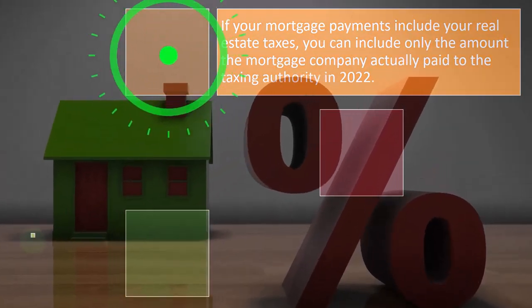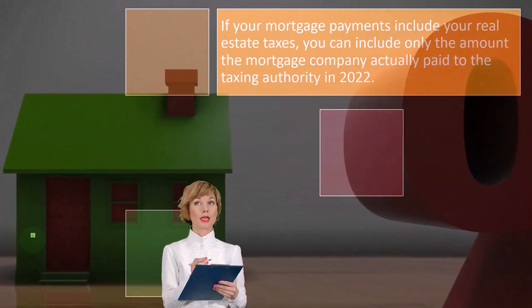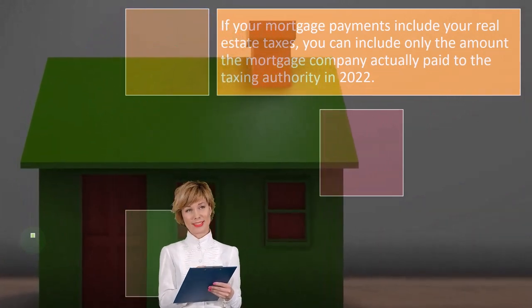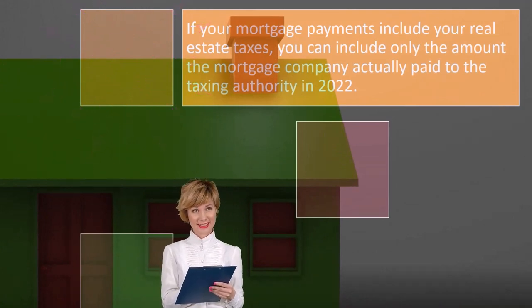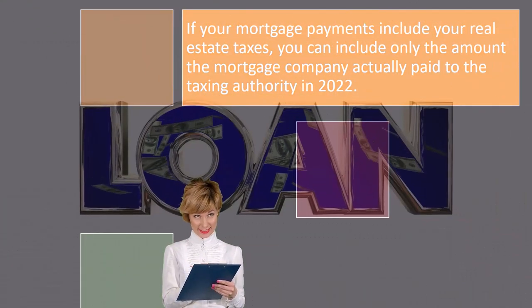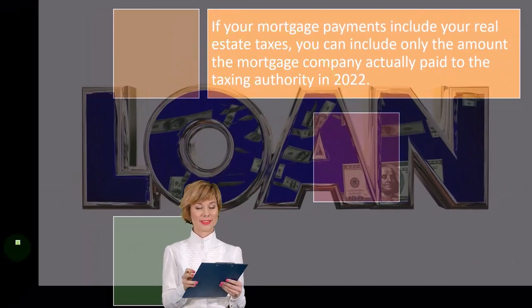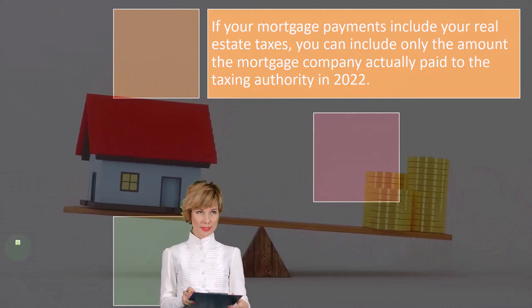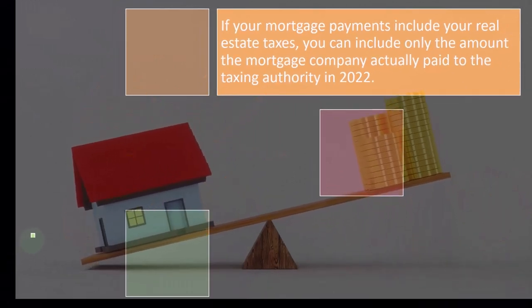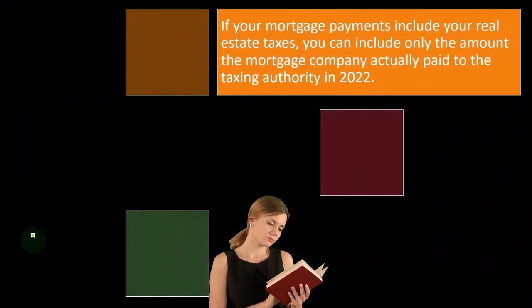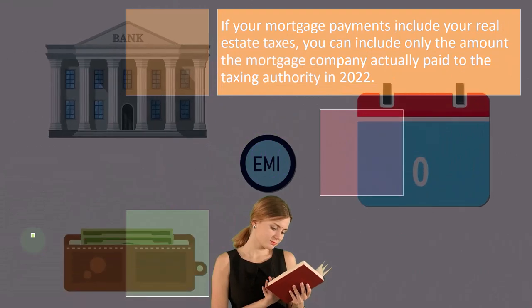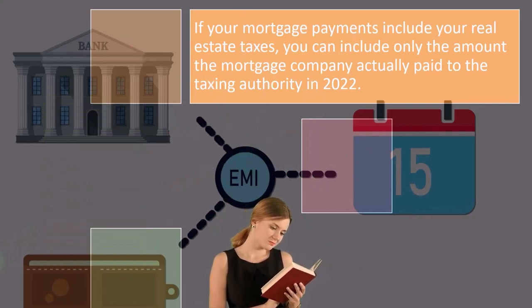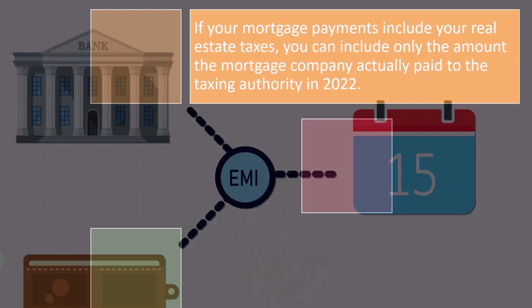If your mortgage payments include your real estate taxes, you can include only the amount the mortgage company actually paid to the taxing authority. You might pay property taxes directly — you have a home loan, you're paying off the mortgage, and you pay the state and locality for property taxes separately. Sometimes they package those together so your mortgage payments cover both, and then the mortgage company pays off the property taxes. The mortgage company should give you a Form 1098, which provides information on how much you paid in mortgage interest and real estate taxes.